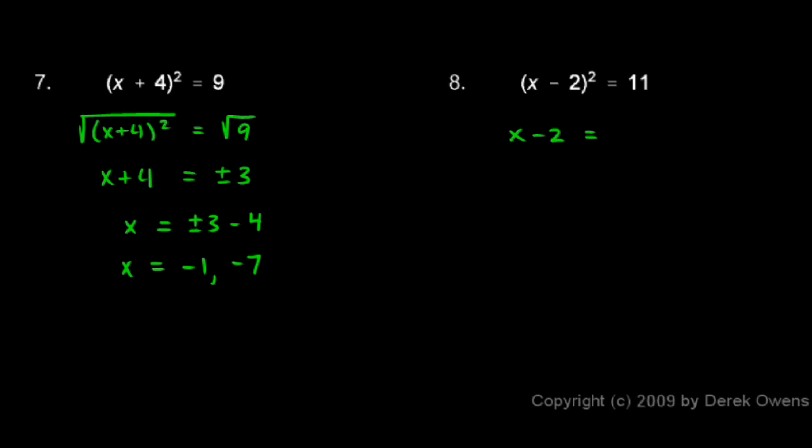On the right, when we take the square root of 11, we just have the square root of 11. And I'll write it as plus or minus the square root of 11. We could convert that to a decimal, but that's exact.